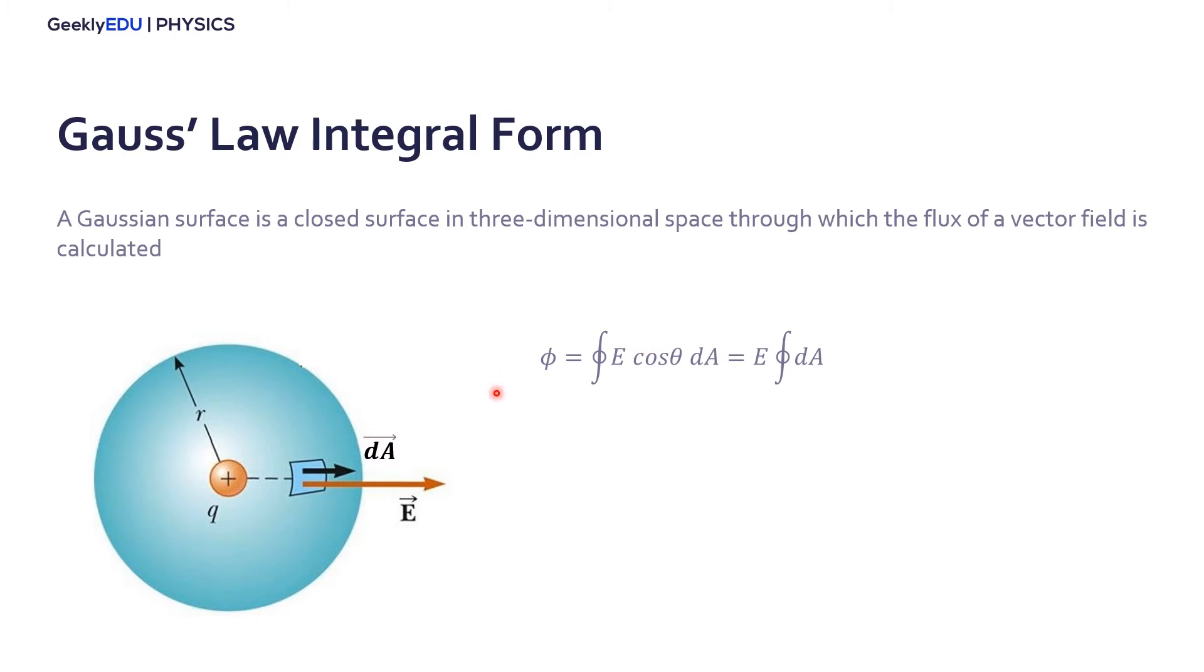Also, because it's a point charge here right in the center, we have that the electric field around this charge here is constant. And it's E. So throughout all the surface of the sphere here, E is constant, so we can take it out from the integral. And we end up with this here.